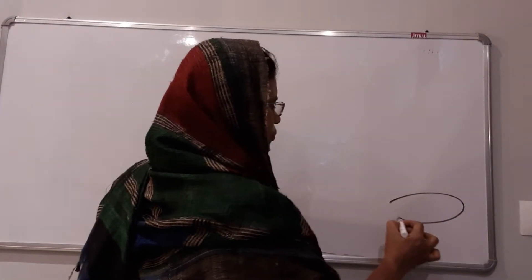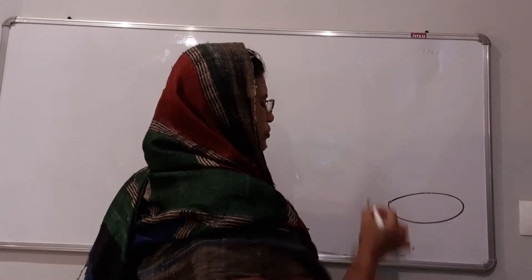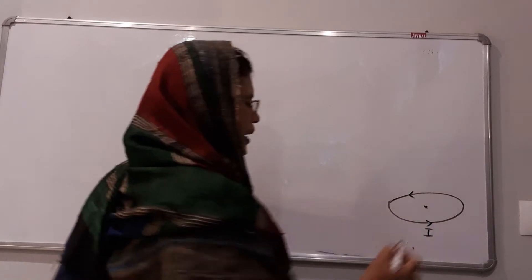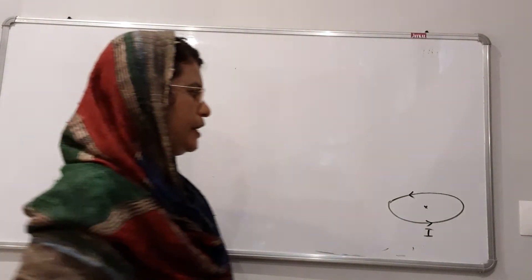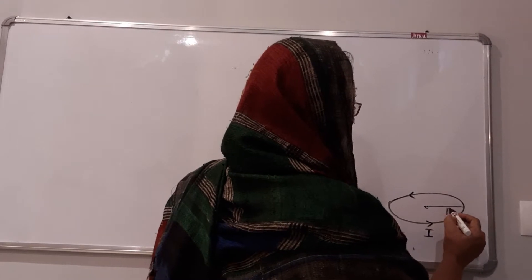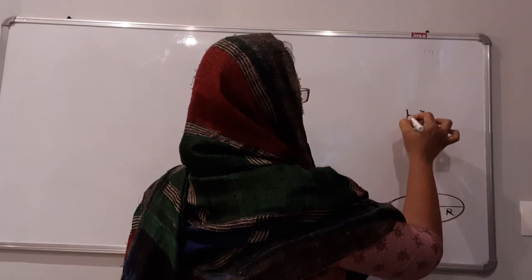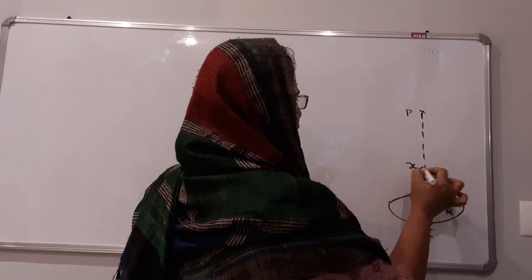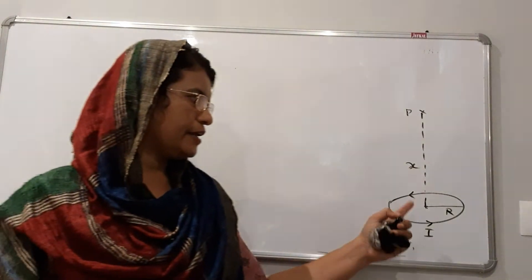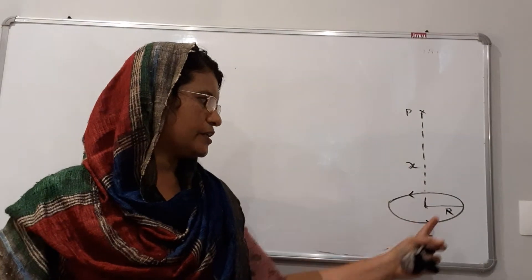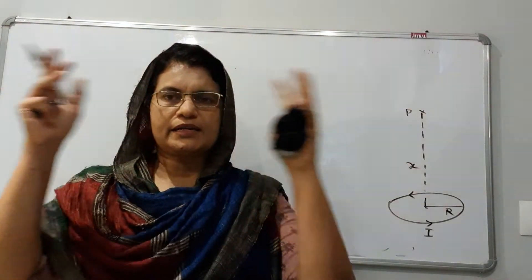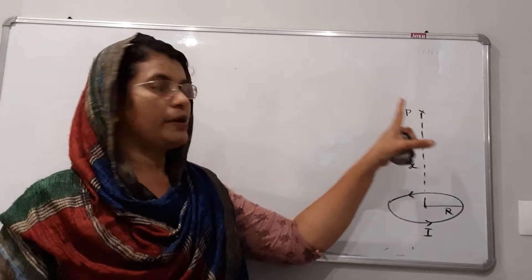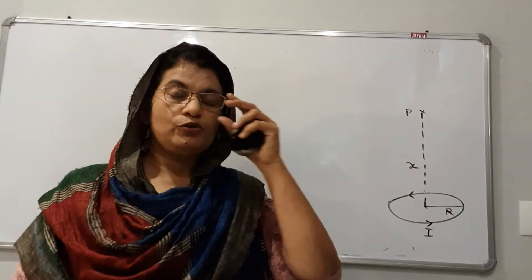Consider a loop — a coil with one turn — with current I flowing in the anti-clockwise direction. The radius of this loop is capital R, and we have to find the magnetic field intensity at point P, at a distance x from the centre of the loop. When current flows through a conductor, a magnetic field is set up around it, and we have to find the magnetic field at point P due to this current-carrying conductor.